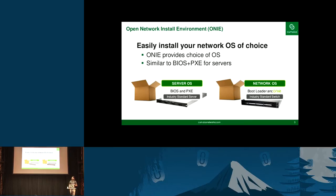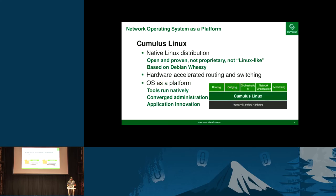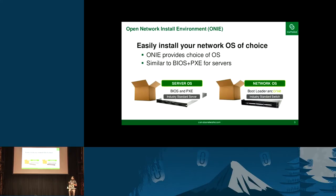ONI is the installer that lives on these open networking switches when they come out of the factory. What it does is allow you to basically PXE-install a network operating system. But unlike PXE, you can use IPv6, SFTP, HTTPS — all sorts of things that are better than TFTP.